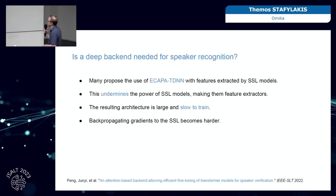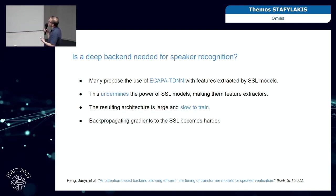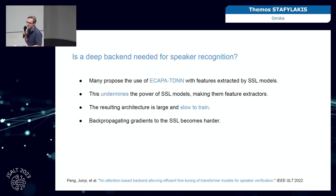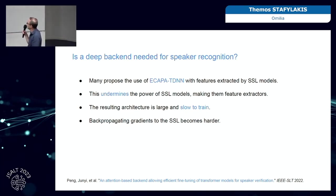Parallel to that, we were working with BQT on another way of extracting and accumulating information from SSL models. Many people propose using the state-of-the-art ECAPA-TDNN and essentially replacing its standard input — filter banks — with SSL features. But we believe this undermines the real power of SSL models, turning them into just a low-level feature extractor. The architecture likely has the capacity for speaker recognition with just a better pooling mechanism. It's also hard to train the whole architecture with backpropagation through gradients.